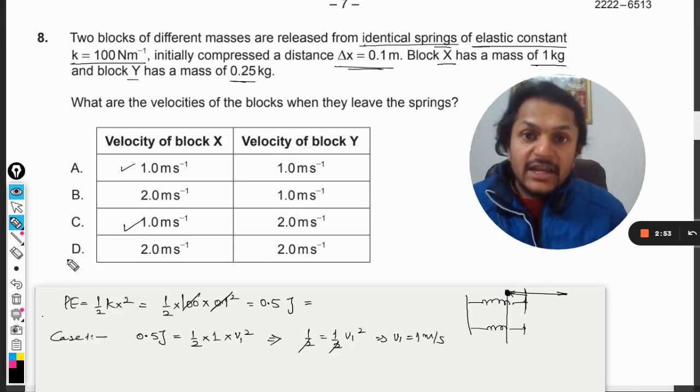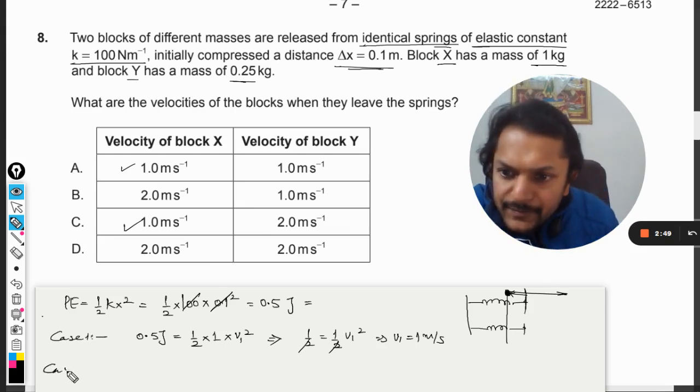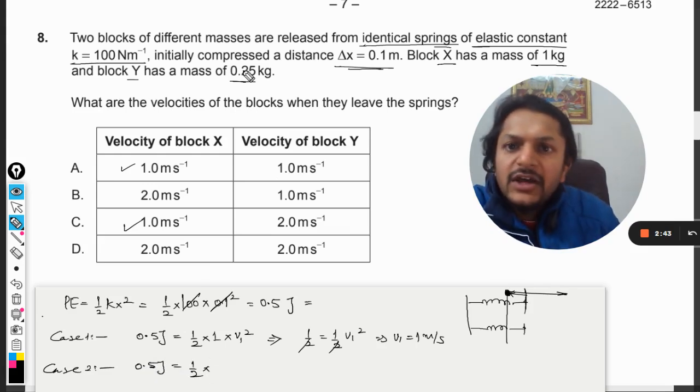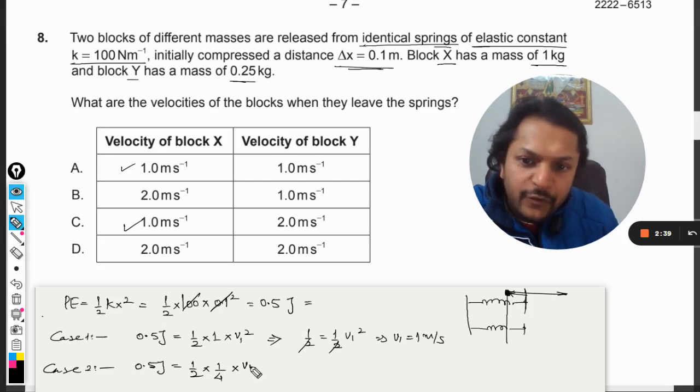Now let us consider body Y. This is case number two. Again, 0.5 joule will be equated with half into mass, that is 0.25, which can be written as 1 by 4, times v2 squared.